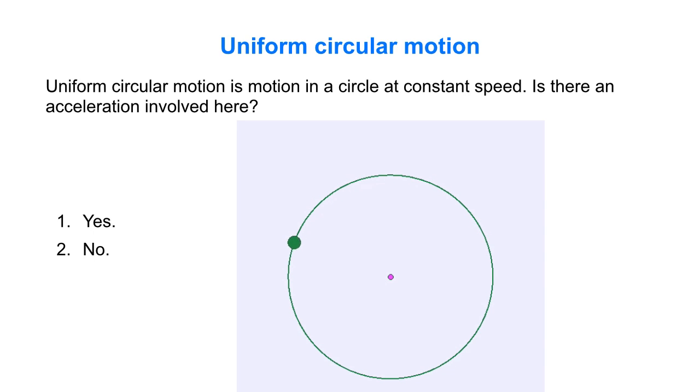So here's an object experiencing uniform circular motion, going around a circle at constant speed. As it goes around the circle, does it have an acceleration? Yes or no?